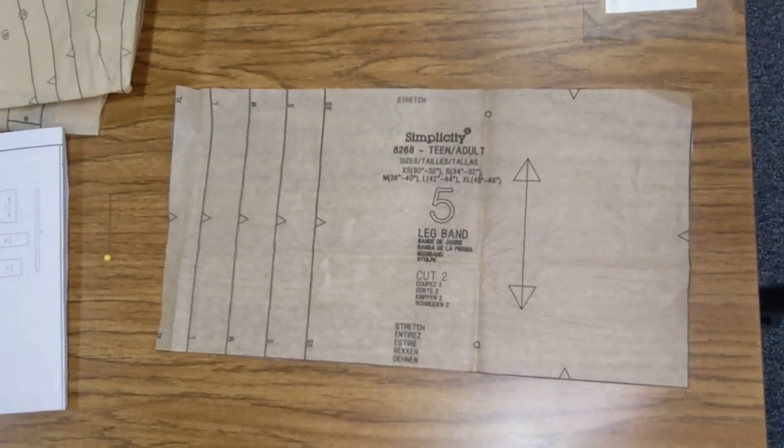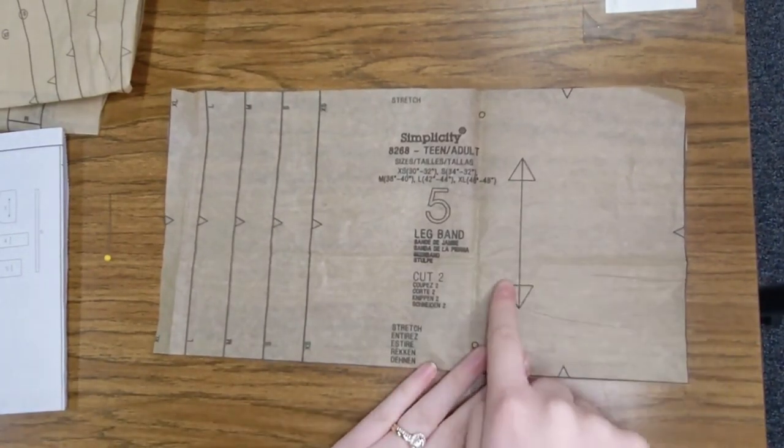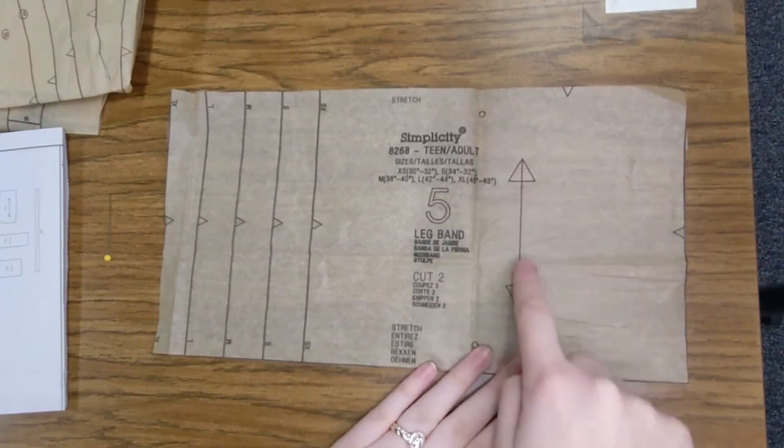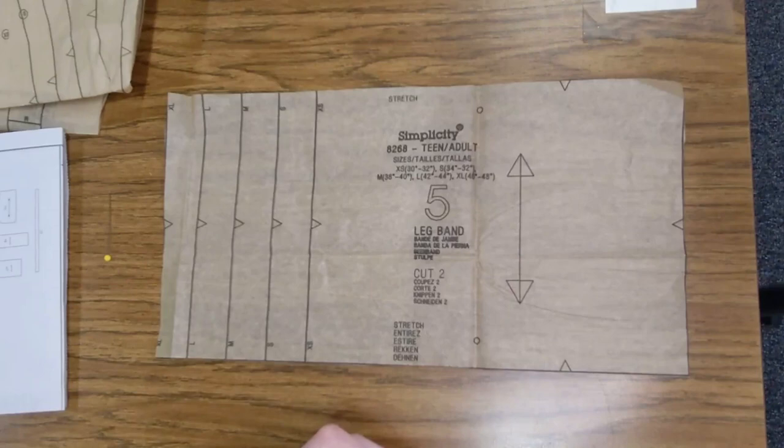Let's talk about some of the symbols on our patterns. So here we have an arrow. This is our straight of grain arrow. The straight of grain arrow should always be parallel to the selvedge and the fold of the fabric when you lay it out.